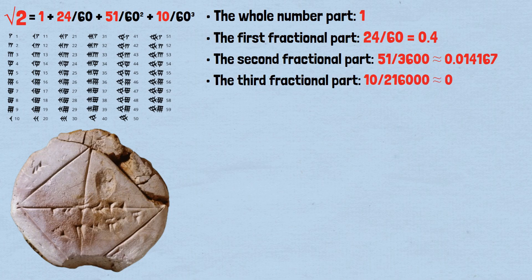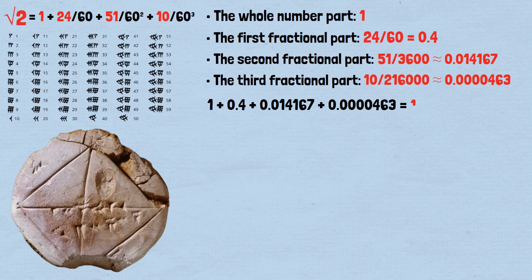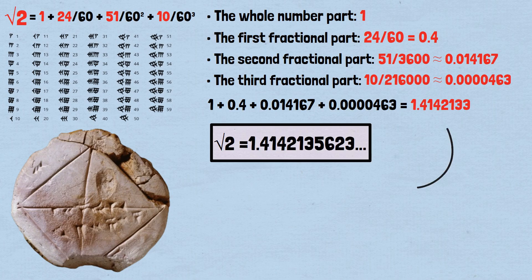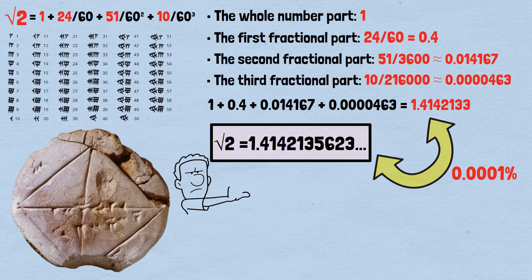Adding these components: 1 plus 0.4 plus 0.014167 plus 0.0000463 equals 1.4142133. The actual value of the square root of 2 is 1.4142135623, so the Babylonian approximation differs by less than 0.0001. This level of precision wouldn't be achieved again until much later civilizations developed more advanced mathematical tools.